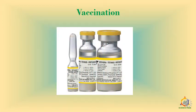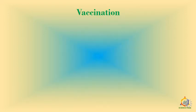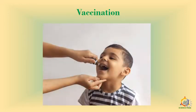The vaccines for diphtheria, whooping cough, and tetanus are combined into a triple vaccine and given as an injection, whereas the polio vaccine is given orally.